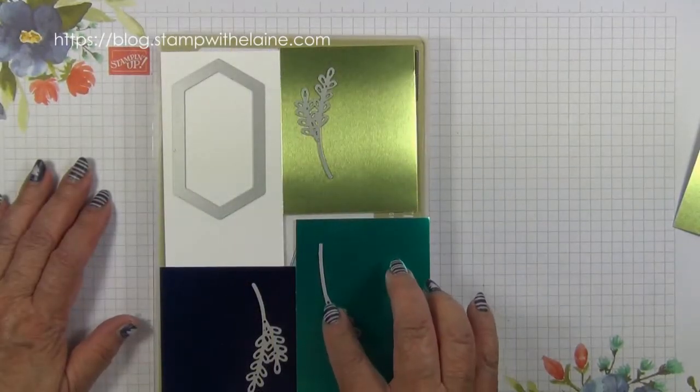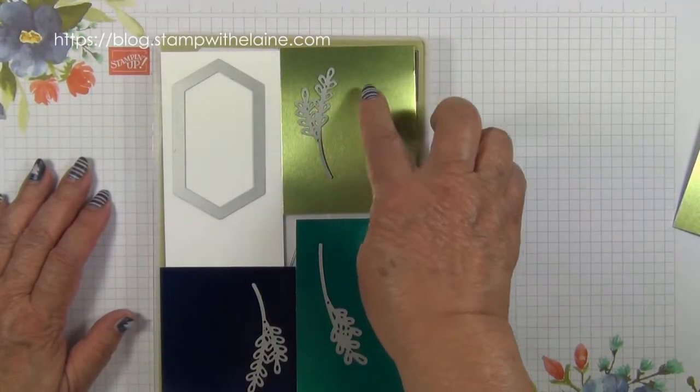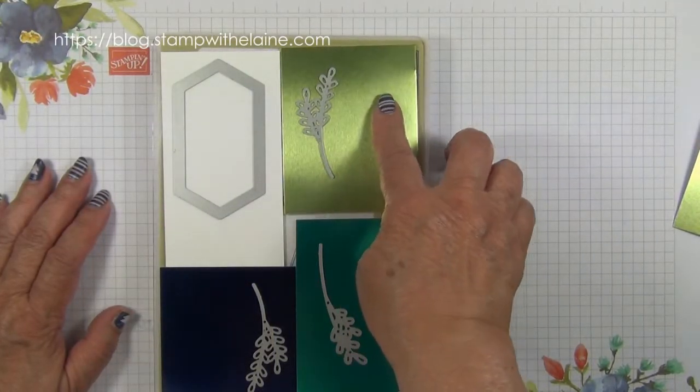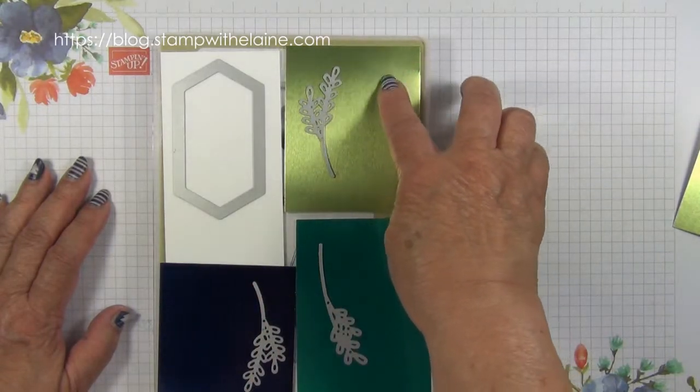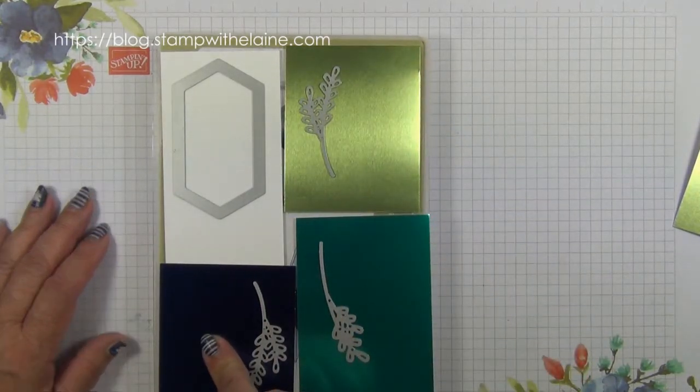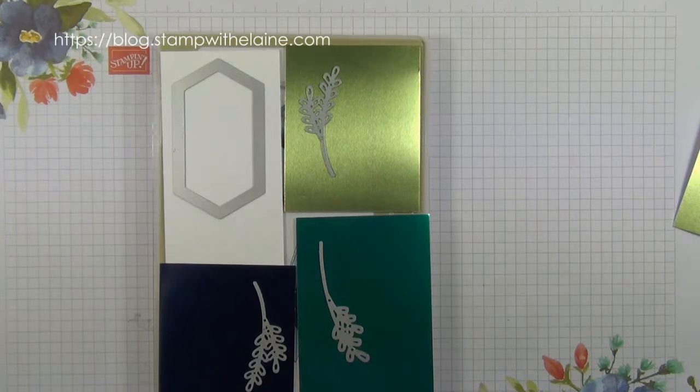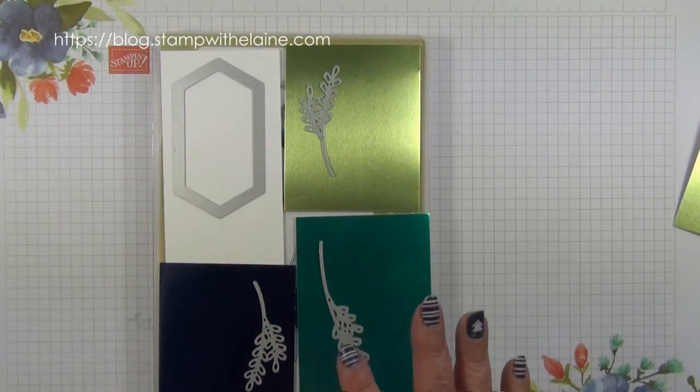From the peacock feathers dies I'll cut some feathers using the three colored foils: old olive, pretty peacock, and blueberry bushels. So I'll do that off camera and I'll be back.